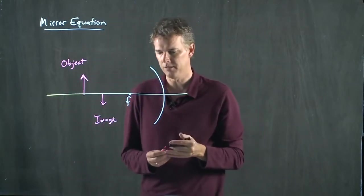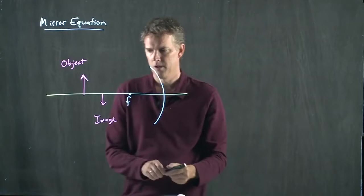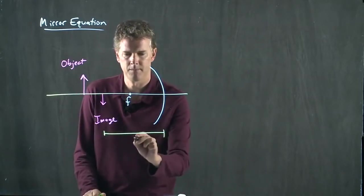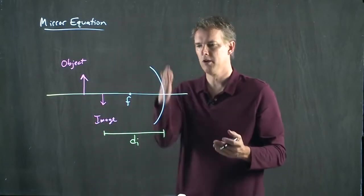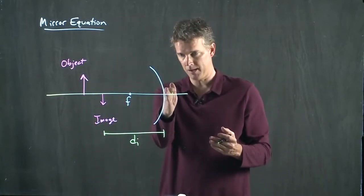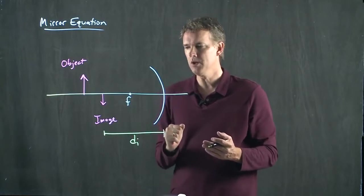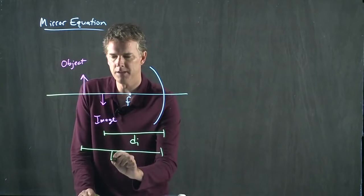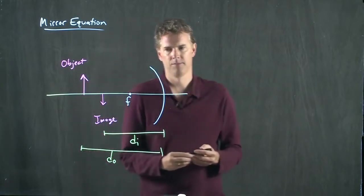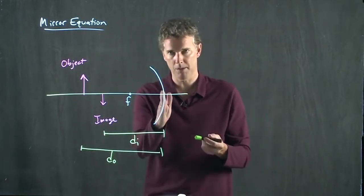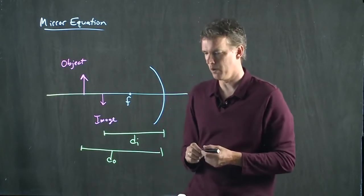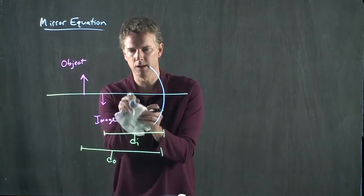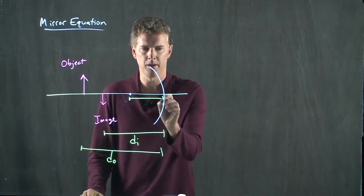There are some distances that we can measure here. One of them is this. Distance to the image. From the mirror, from the apex of the mirror, to the image, what is that distance? Likewise, we can measure the distance to the object. From the apex of the mirror to the object, what is that distance? And then finally, we can of course measure the focal length, which is from there to there.